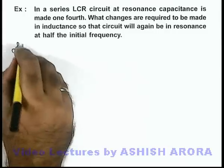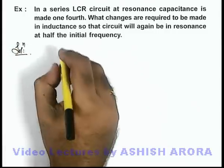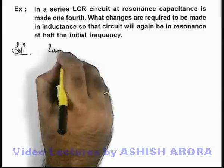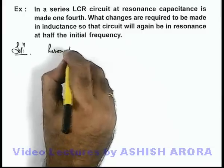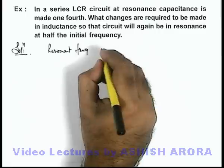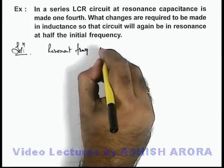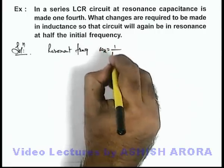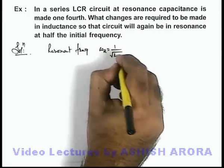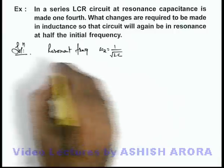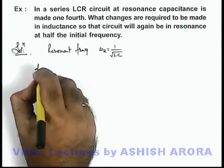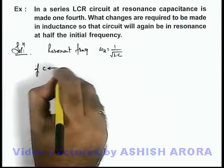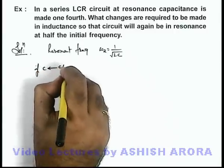Now here we know well that the resonant frequency for a series RLC circuit is omega_r, which can be written as 1 by root of LC. And here, if C is replaced by C/4, we can analyze the effect.